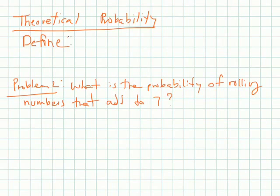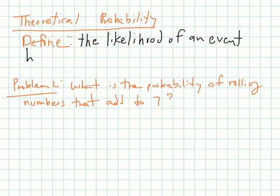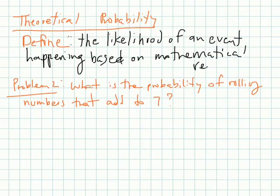Theoretical probability. Let's define this. Theoretical probability is the likelihood of an event happening based on mathematical reasoning.